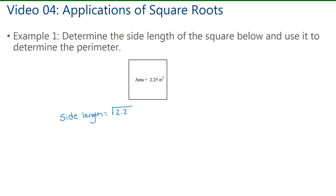So we've got to find the square root of 2.25. Now I see that we have an even number of decimal places, and 2.25 can be compared to 225. The square root of 225 is 15, as we wrote in the list in a previous video. So since the square root of 225 is 15, my answer needs one decimal place. That makes the side length 1.5 meters.